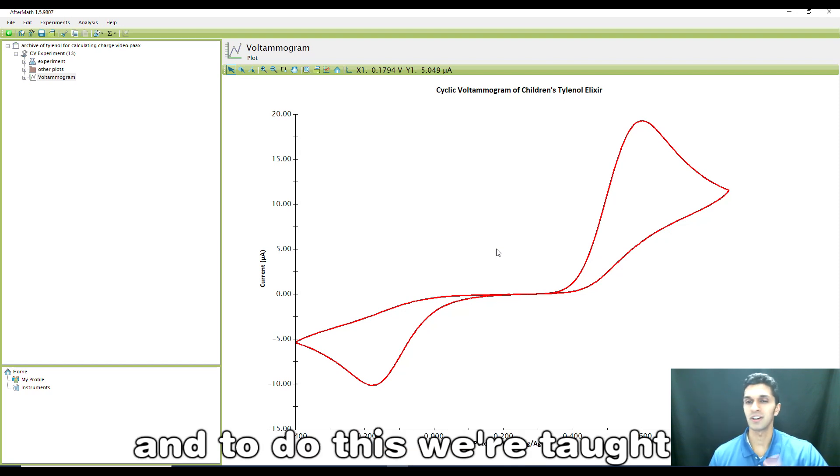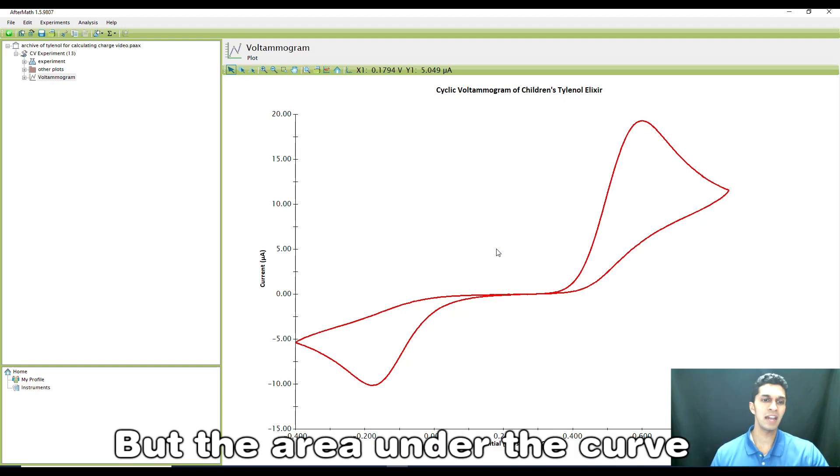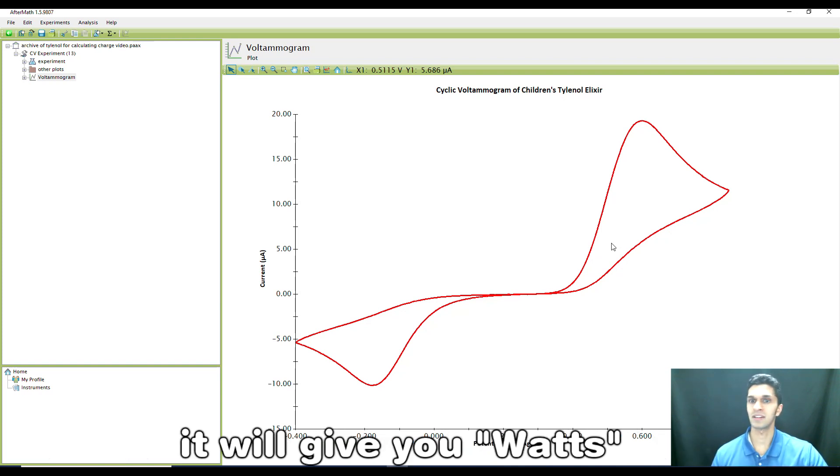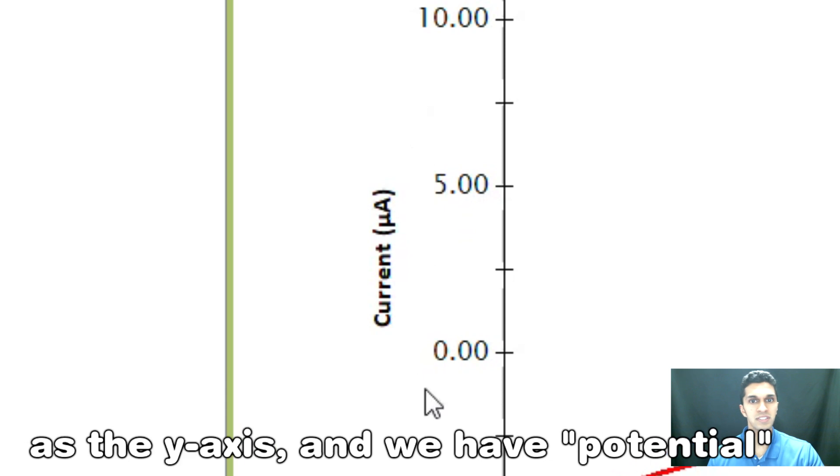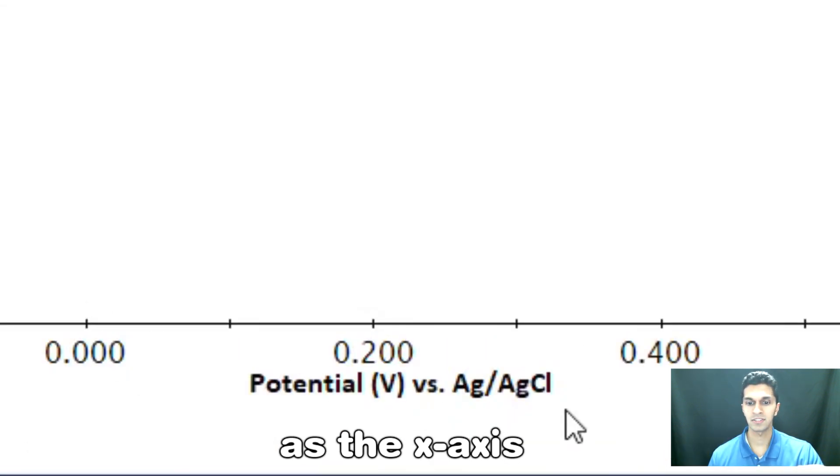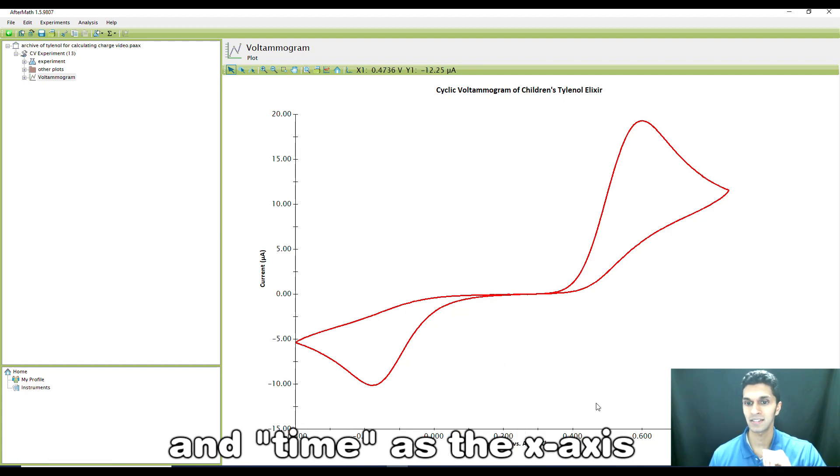To do this, we're taught you need to determine what the area under the curve is. But the area under the curve of the cyclic voltammogram will not give you units of coulombs of charge, it'll give you watts. That's because we have current as the y-axis and potential as the x-axis. What we need is current as the y-axis and time as the x-axis.